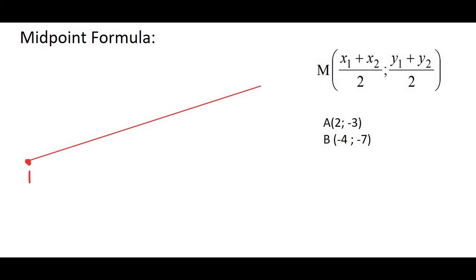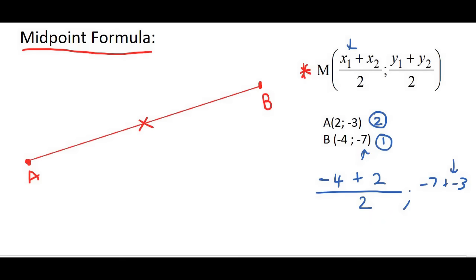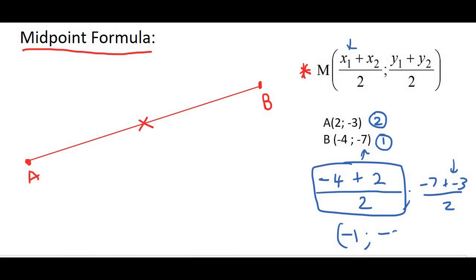The next formula we're going to look at is the midpoint formula. If we have two points A and B, the midpoint formula finds the point that is exactly in the middle. The formula is shown here, and we can try an example using these coordinates. You always need to make the choice as to which is point 2 and which is point 1. So we get minus 4 plus 2 over 2 for the X value, and minus 7 plus minus 3 over 2 for the Y value. Typing these in the calculator gives negative 1 and negative 5, so the midpoint has coordinates (−1, −5).